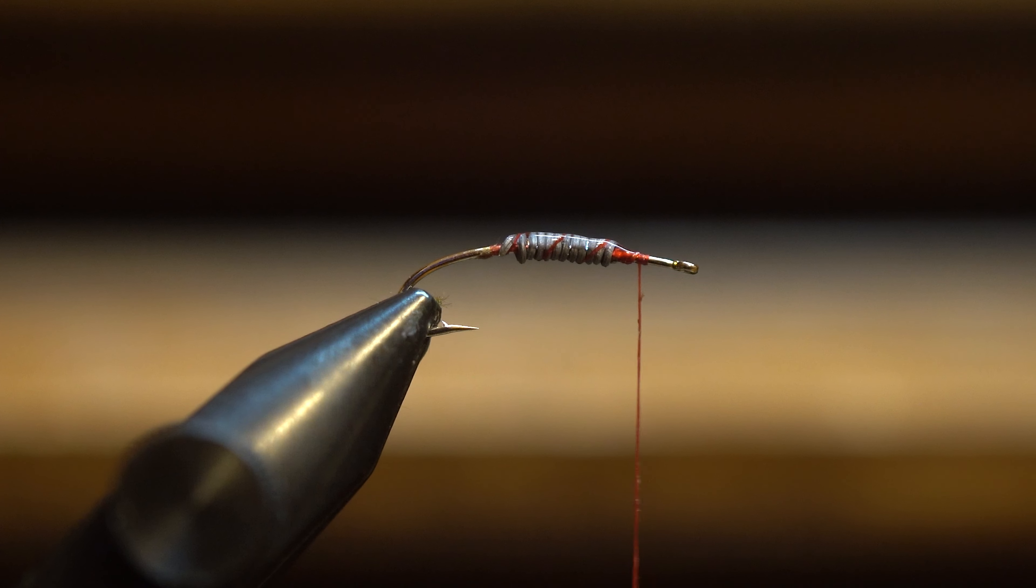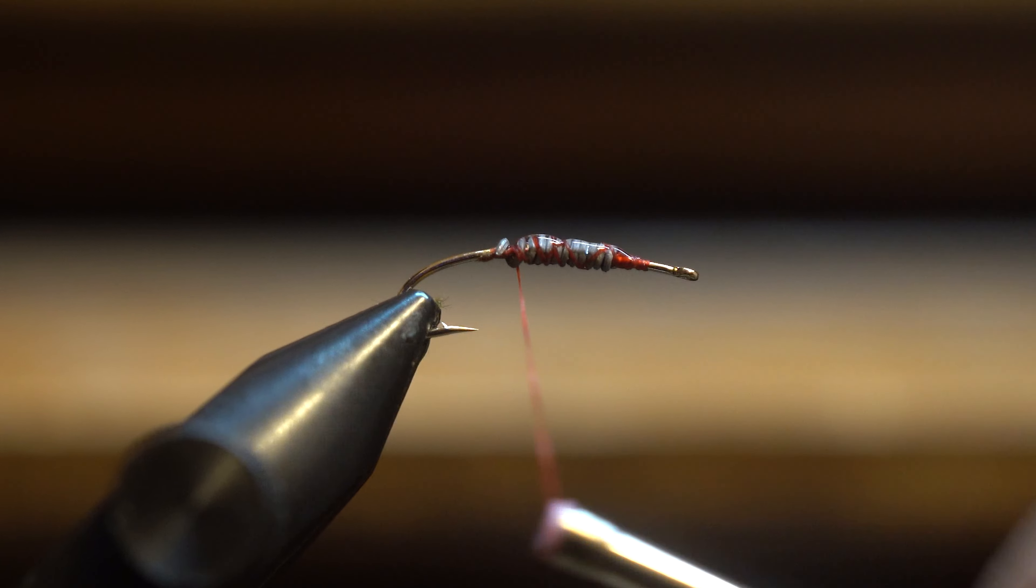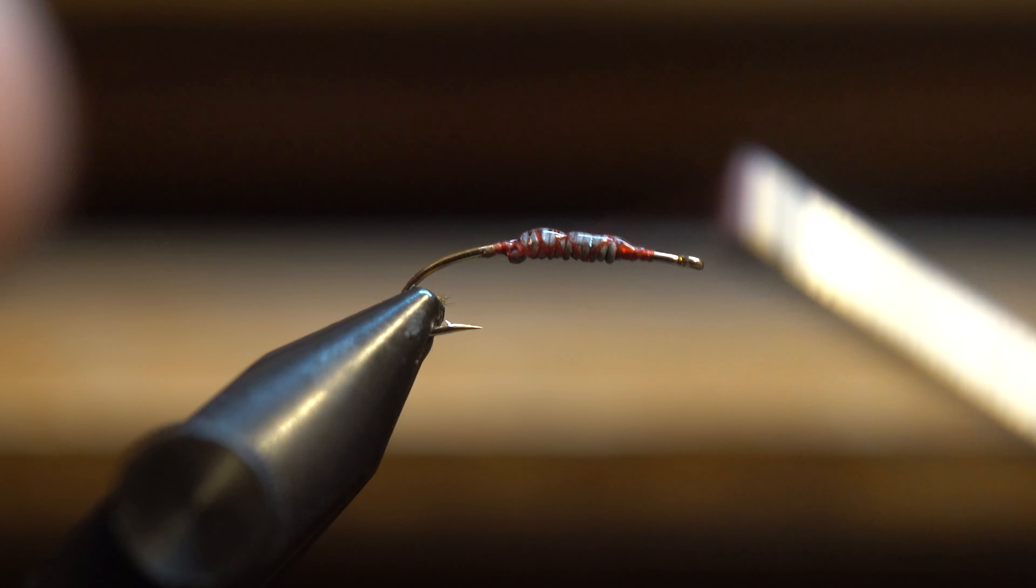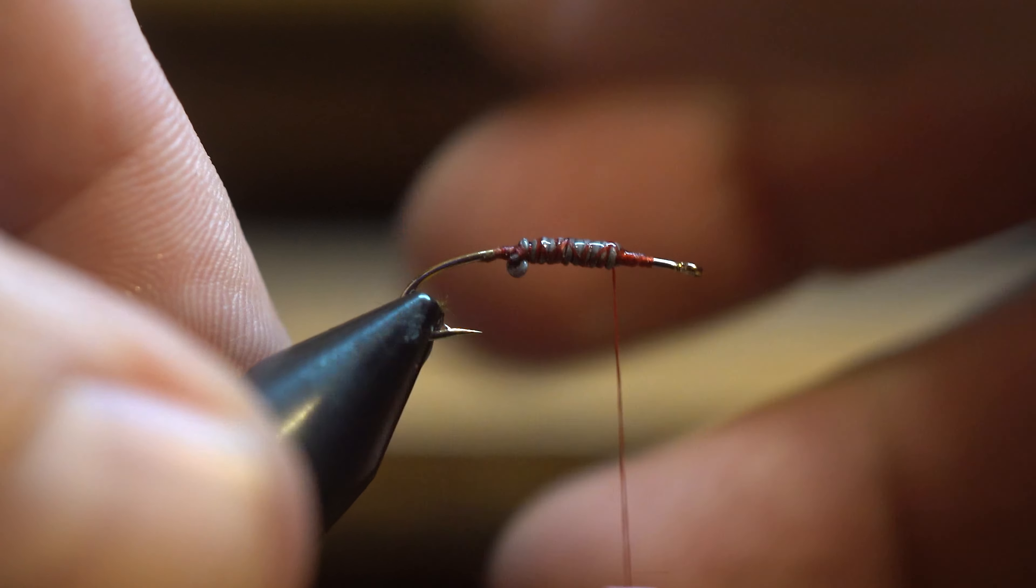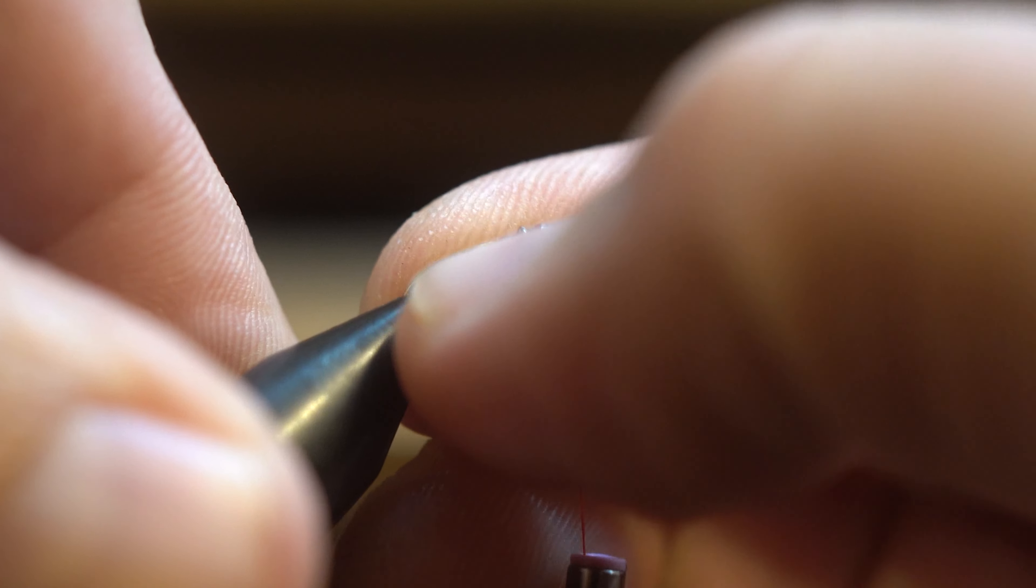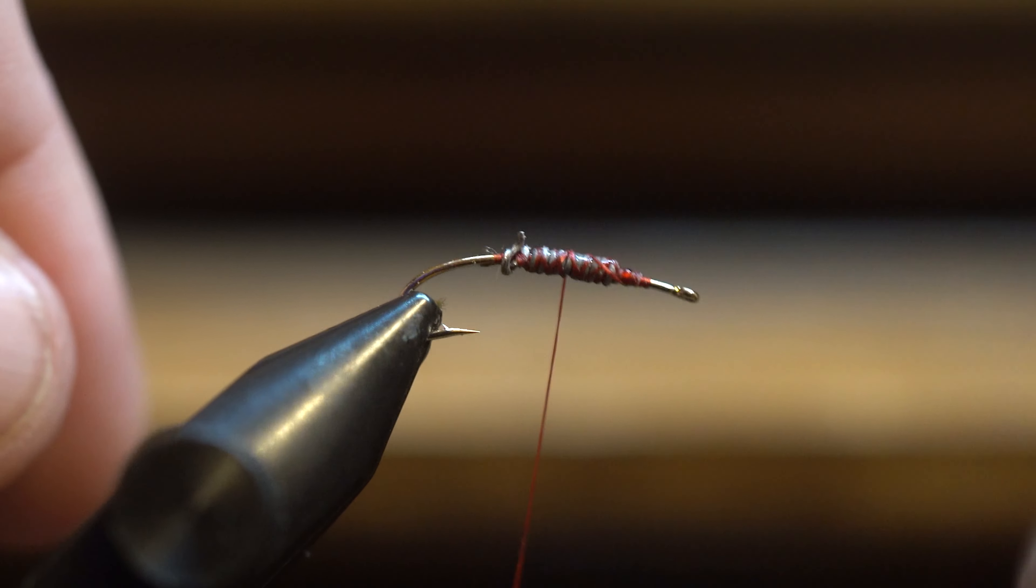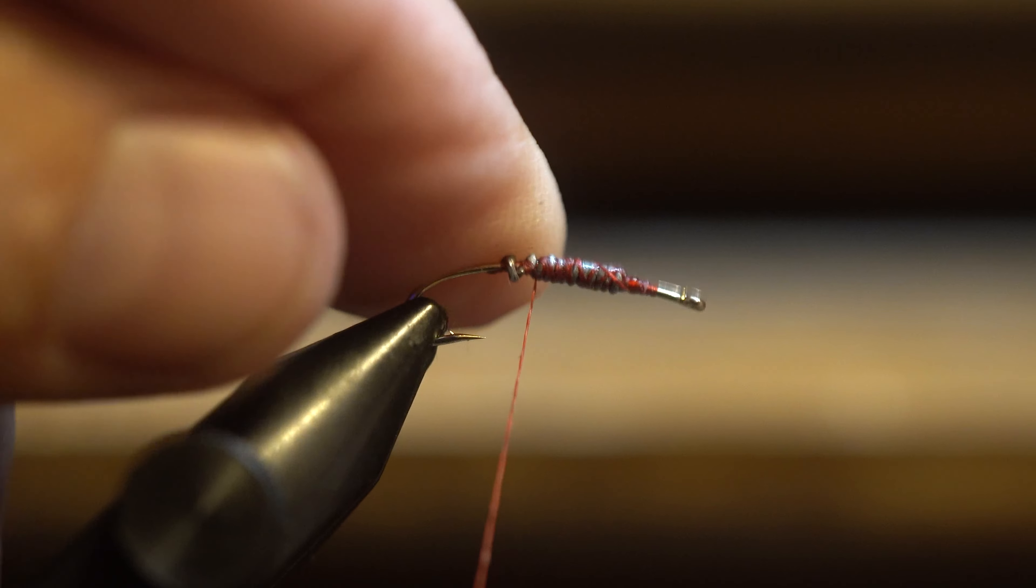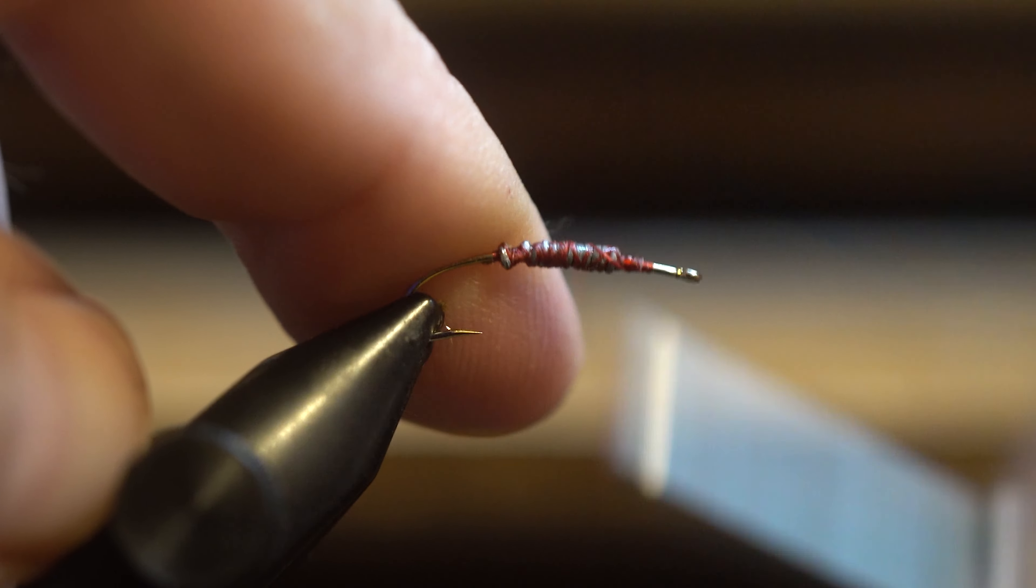So on this worm pattern, I'm actually right in the middle of the hook, I'm putting some lead just wrapped around. You can tell my kid's been in the fly tying stuff again, because the glue's got the lid off it. But I put a little bit of super glue on my lead. And then, I'll wrap my thread through it.